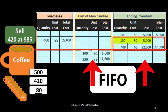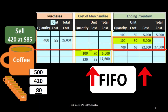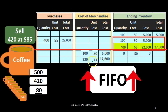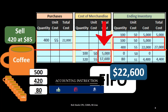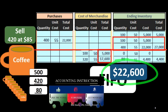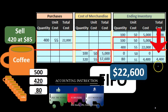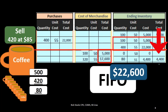For ending inventory: the first layer had 100 units and we sold all 100, leaving zero — zero times $50 is $0. The second layer had 400 units and we sold 320, leaving 80 units. Those 80 remaining units are at the higher cost of $55: 80 × $55 = $4,400. The zero from the first layer plus $4,400 from the second layer gives us $4,400 in ending inventory. Cost of goods sold is $22,600 and ending inventory is $4,400.